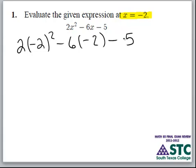The first step to complete this is to follow the order of operations. We have no parentheses but we do have exponents, so we operate on the exponents first. Negative 2 squared is 4. So then we write 2 times 4 minus 6 times negative 2 minus 5.